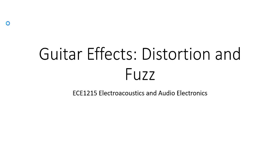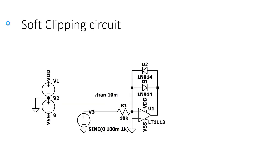This is the ECE 1215 Electroacoustics and Audio Electronics lecture on distortion and fuzz guitar effects. The first type of distortion effect I'm going to talk about is the soft clipping circuit.